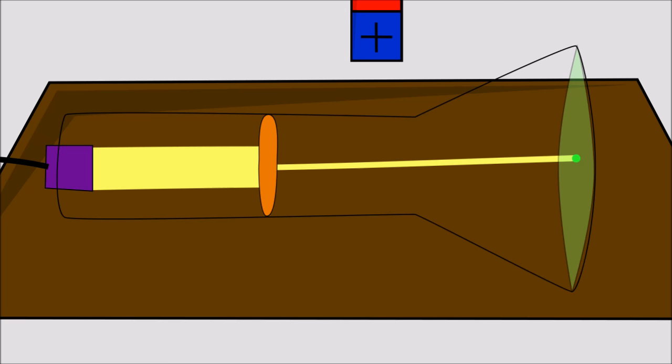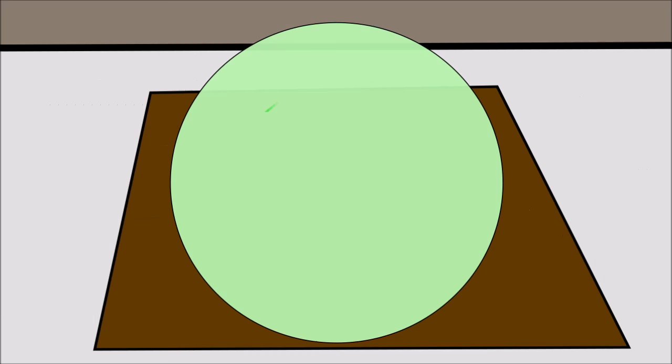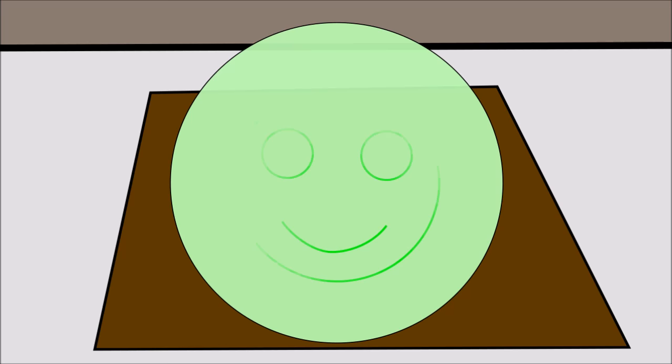Since this beam has a negative charge, it can be affected by magnets, which are used to bend the beam. When done fast enough, an image can be displayed.